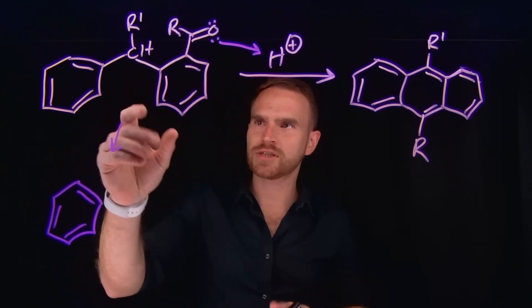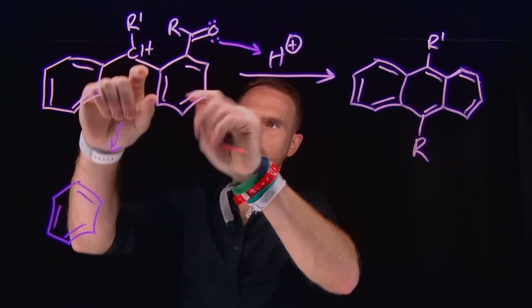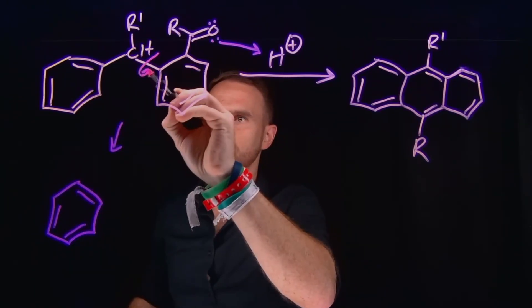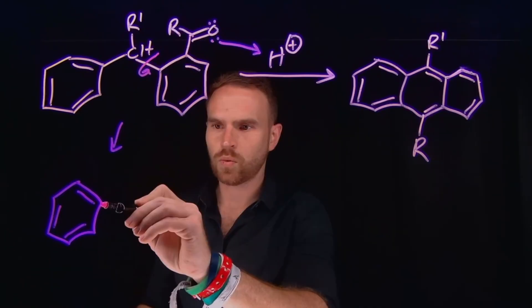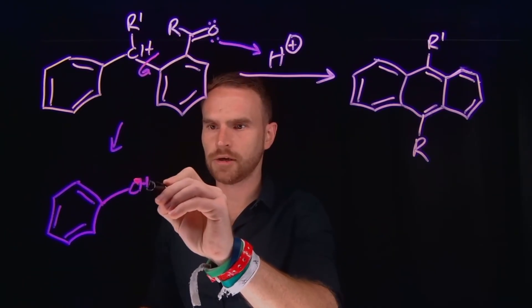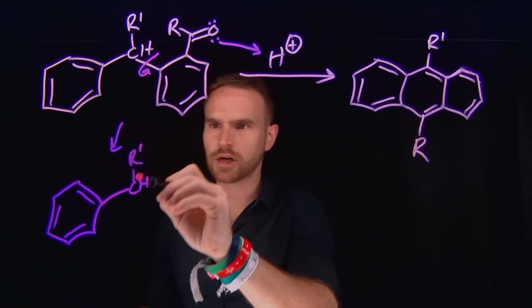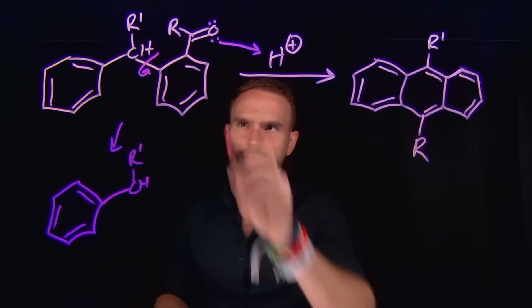So now, originally, I drew this molecule in this orientation, but remember, I can rotate around this sigma bond, so that's the way I'm going to draw it next. Where this carbon bond is still present here, we still have this R group, which I'll label as R' to distinguish between the other R group.